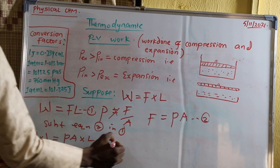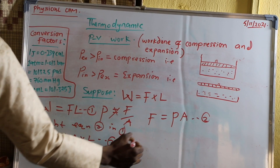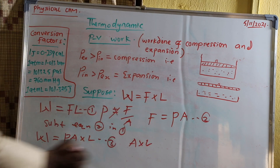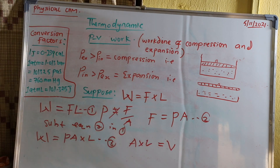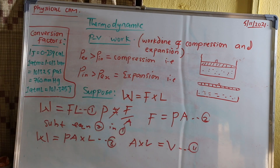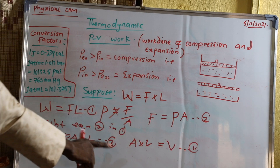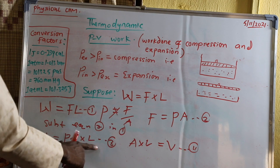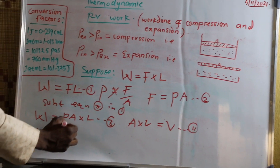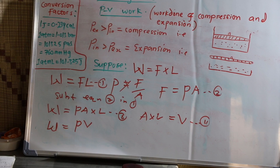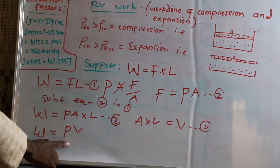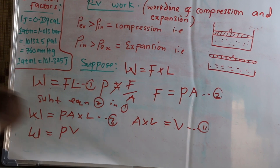We know that area times distance is equal to volume. So substituting that in: work will be equal to P times V. That is work equals pressure times volume. For an infinitesimal change, the work dW will be equal to P·dV, and for a measurable change, the ΔV is equal to V final minus V initial.